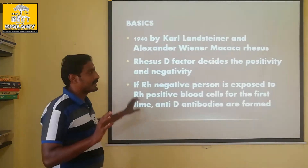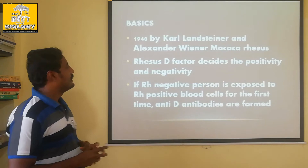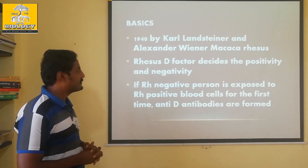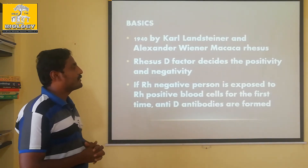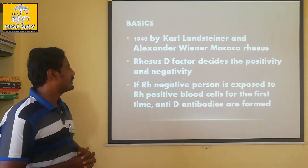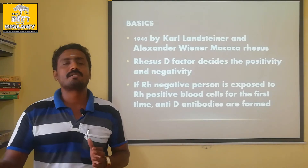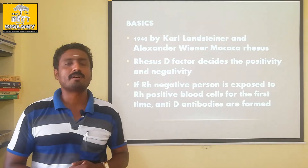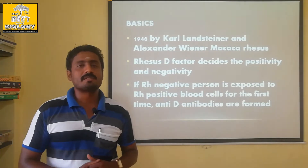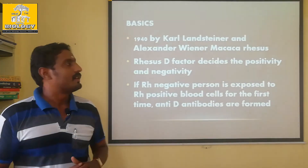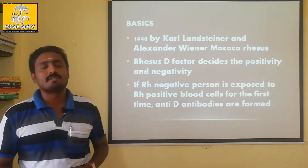Now, if RH negative blood is exposed to RH positive blood cells for the first time, anti-D antibodies are produced. RH positive blood has anti-D antibodies produced against it.